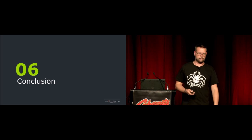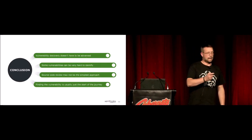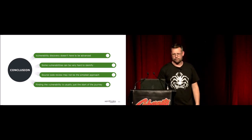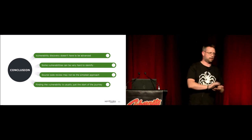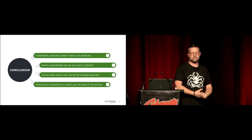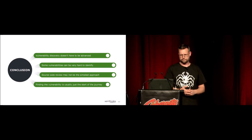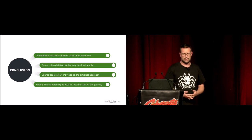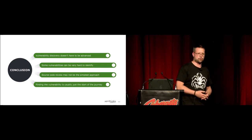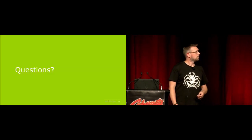That's all the demos and all the 0-days. Hopefully I'll have time to report them to the vendor before somebody else takes credit. In conclusion: vulnerability discovery doesn't have to be advanced — you can just search GitHub for 'curl verify SSL' and find some vulnerabilities. Some types of vulnerabilities are very hard to identify and can live in a code base for a decade. If you have a very dynamic application, static source code review might not be the best approach. And finding a piece of vulnerable code is only the start of the journey — you still have to prove it's vulnerable, deal with the vendor, release an advisory, get a patch out, and hopefully everyone stays safe and secure.